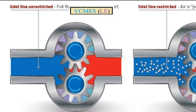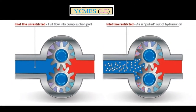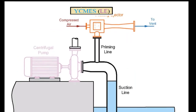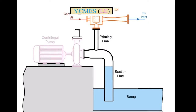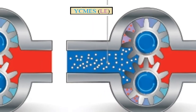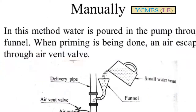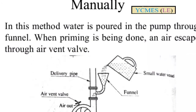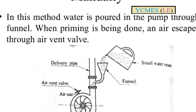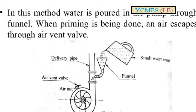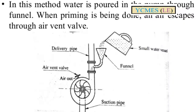As for modern pumps, they have a priming attachment built in. But for older pumps, priming is very important and must be done manually. The priming process involves filling the casing line and suction line with water.